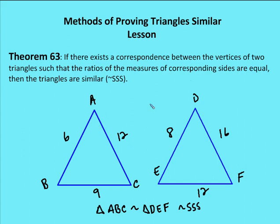Take a look at triangle ABC and DEF. The length of AB is 6, DE is 8, BC is 9, EF is 12, DF is 16, and AC is 12. You can see that the relationship between the side lengths of triangle ABC and DEF is going to be 3 to 4. Because there is a correspondence between the triangles such that the ratio of the side lengths remains constant at 3 to 4, we can say the two triangles are similar.